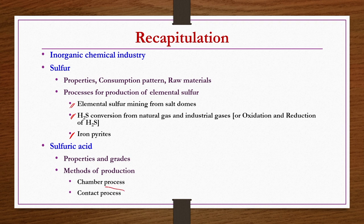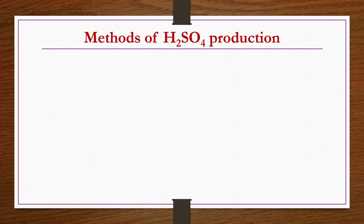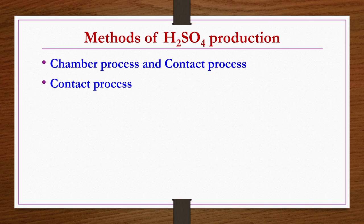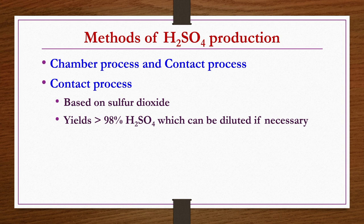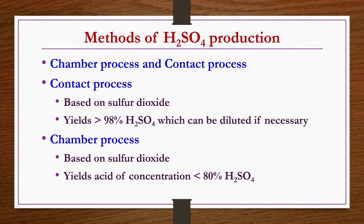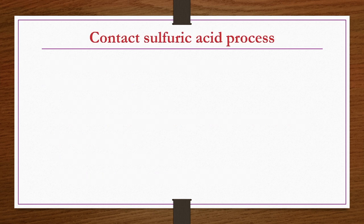In today's lecture, we are going to discuss production of sulphuric acid using the contact process. The contact process is based on sulphur dioxide and yields acid of concentration more than 98 percent H2SO4. Now we see the details of the contact sulphuric acid process.